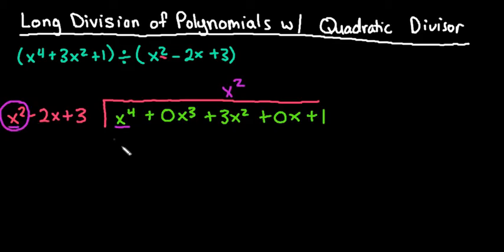So I'm going to do x squared times x squared which gives me x to the fourth. I'm going to do x squared times negative 2x which gives me negative 2x to the third power, and then I'm going to multiply the x squared by the 3, so I have to multiply it to everything. So I would get plus 3x squared.